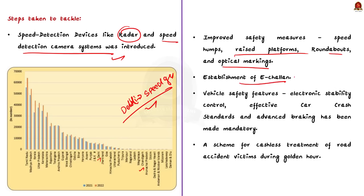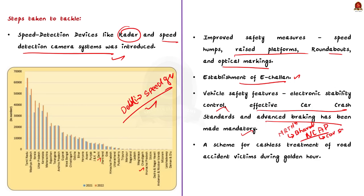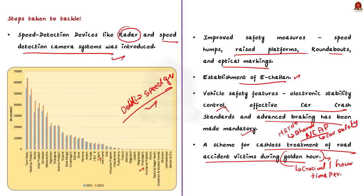Thirdly, the e-challan system has been implemented to decrease corruption in traffic infringement fines. Fourthly, vehicle safety features like electronic stability control, effective car crash standards and advanced braking have been made mandatory. For example, the Ministry of Road Transport and Highways recently introduced the Bharat NCAP (New Car Assessment Program) to give five stars to vehicles indicating their safety in a crash. Finally, to reduce fatalities, the Motor Vehicles Act provides for a scheme for cashless treatment of road accident victims during the golden hour — the one-hour period following a traumatic injury during which medical care has the highest likelihood of preventing death.